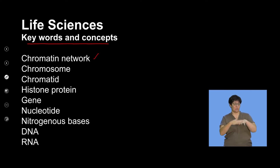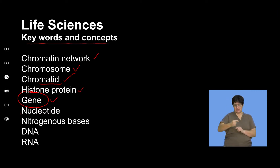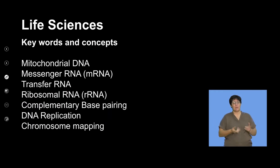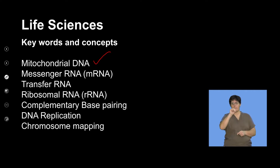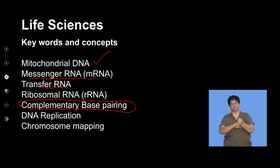Some key words we'll discuss include the chromatin network, chromosomes, chromatids, and histone proteins. Fundamentally important is the concept of a gene, the building blocks of DNA called nucleotides, and the nitrogenous bases found in those nucleotides. We'll look at the types of nucleic acids — DNA and RNA — mention mitochondrial DNA, draw comparisons to RNA, discuss the different types of RNA, and focus on complementary base pairing, DNA replication, and possibly chromosome mapping.